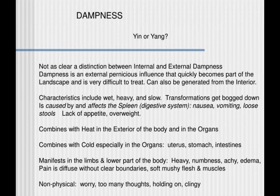Next is dampness. There is not as clear a distinction between internal and external dampness. Dampness is an external pernicious influence that quickly becomes part of the landscape and is very difficult to treat. It can also be generated from the interior. Characteristics include wet, heavy, and slow. Transformations get bogged down, and it is caused by and affects the spleen, particularly the digestive system. Diagnostically: vomiting, loose stools, lack of appetite, and overweight.